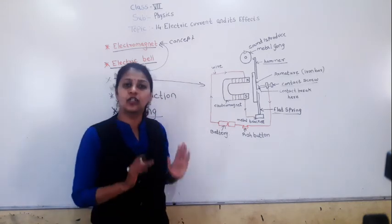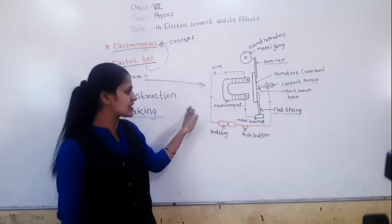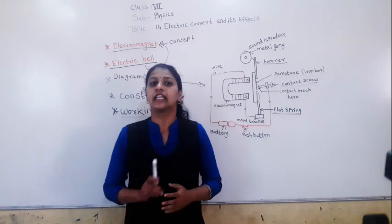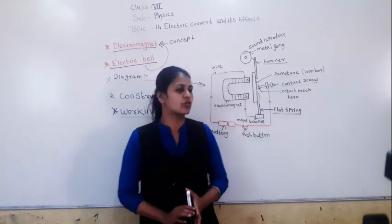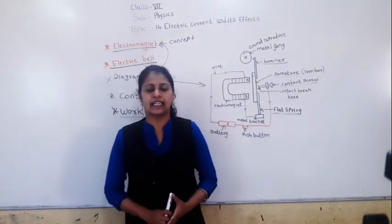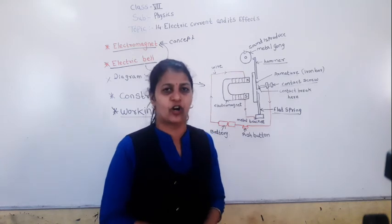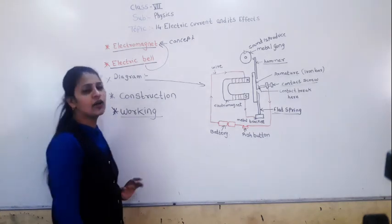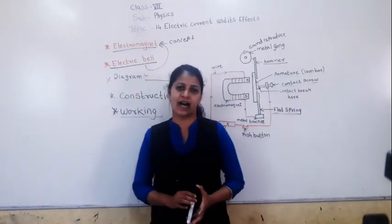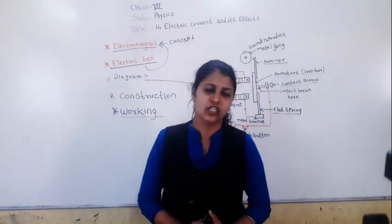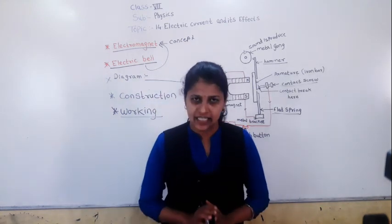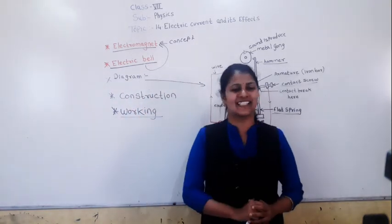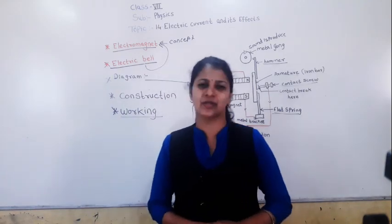Draw this diagram in your physics notebook. Note that this diagram may not be in your NCERT book, so draw it properly. The question may be asked for 5 marks — write the principle, diagram, construction, and working to get full marks. I hope you have understood the electric bell. Today's work is to draw this diagram and write it all out in your physics notebook. Thank you.